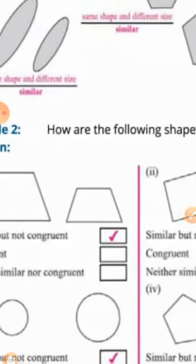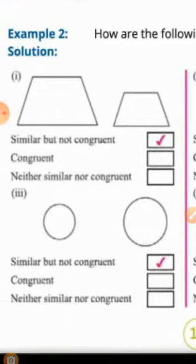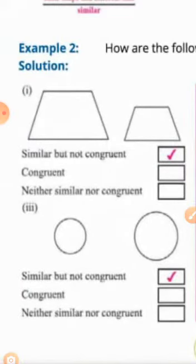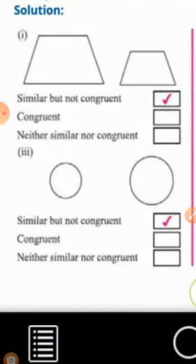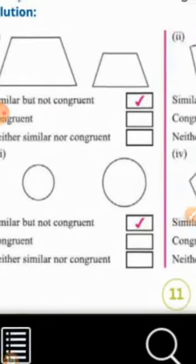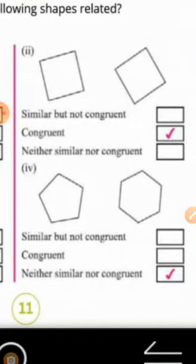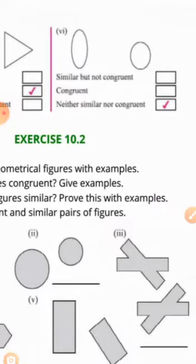Example 2 میں پوچھا ہے how are the following shapes related؟ پہلی: similar but not congruent کیونکہ size different ہے۔ دوسری بھی similar but not congruent — same shape but different size۔ تیسری: congruent ہے کیونکہ same shape same size۔ چوتھی: neither similar nor congruent — نہ shape same ہے نہ size same۔